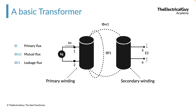Some part of the main flux gets linked with the secondary and some part will not. The question is: why is there leakage flux? Why does some part of the main flux not get linked with the secondary? If you know the answer, let me know in the comments section below.